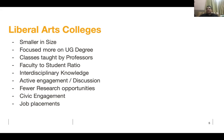At bigger universities with 30,000 to 60,000 students, professors often only teach graduate students while graduate assistants teach undergraduates. At liberal arts colleges, whether you're a freshman or senior, you're taught by professors. The faculty-to-student ratio is much smaller — at Minerva it's 1:7, and on average liberal arts colleges are around 1:10, compared to 1:20 to 1:50 at larger universities.